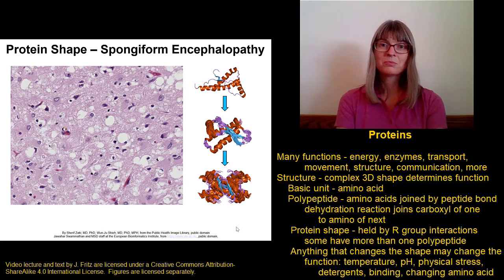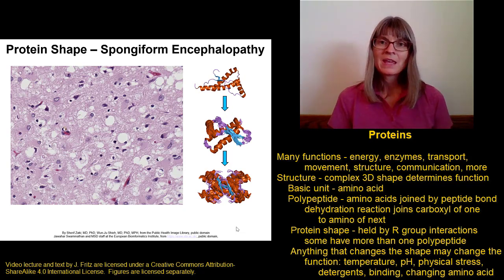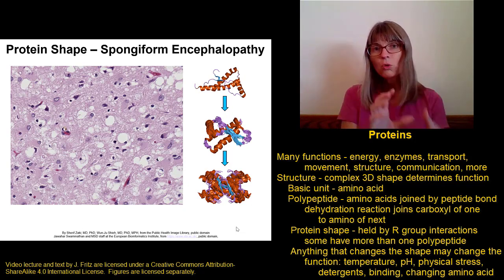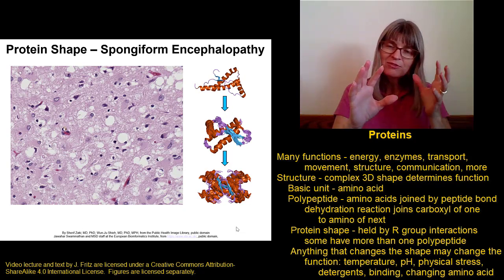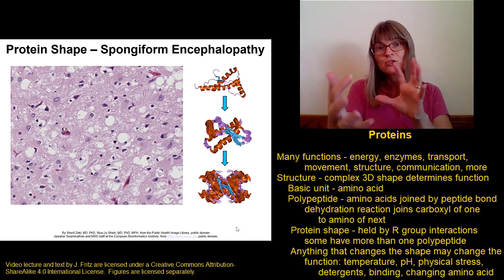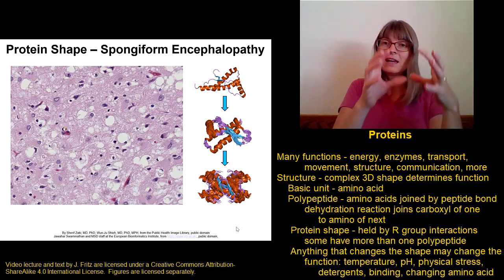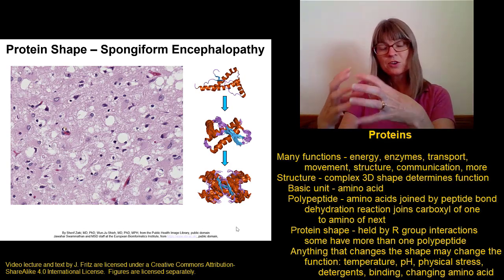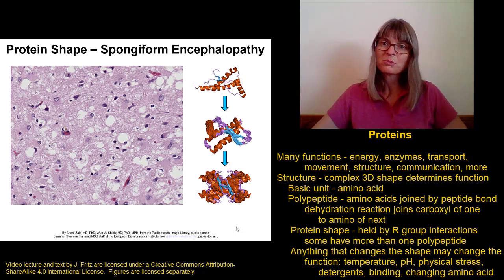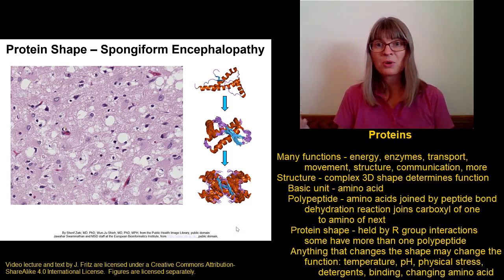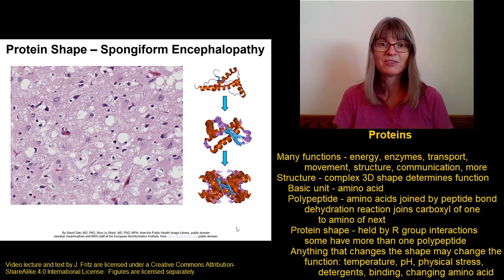Another example of changes in protein shape is spongiform encephalopathy, or mad cow disease. In spongiform encephalopathy, the amino acids in the protein are actually correct, but you have a version that folded incorrectly. This incorrectly folded version of the protein can bump into correctly folded versions, adjust their shape, and grab onto them. This bigger clump can then go on and bump into another correctly folded protein, change its shape, and attach to it. You end up forming huge clumps of proteins that end up killing neurons in the brain, leading to the symptoms associated with spongiform encephalopathy.